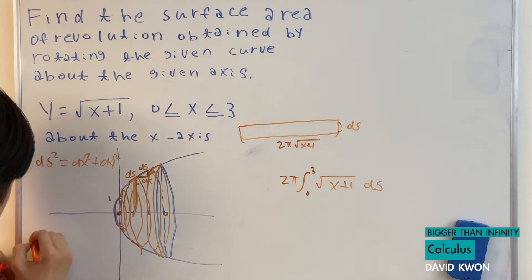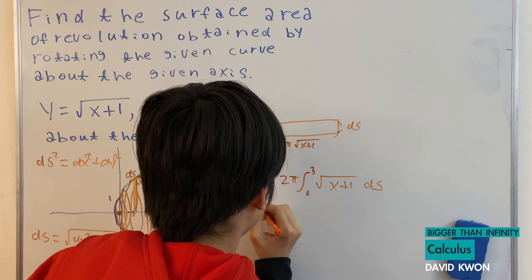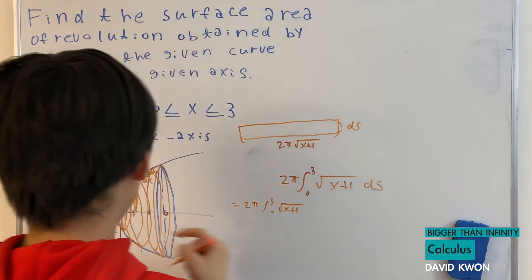Which also means that ds is equal to square root of dx squared plus dy squared. So I will just substitute it in there. And this is that.